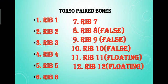Then torso paired bones: there are a number of ribs from rib 1 to rib 12, where ribs 8, 9, and 10 are false ribs and 11 and 12 are floating ribs.